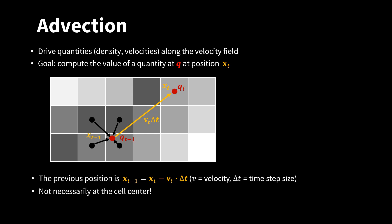The location x t minus v t times delta t is not necessarily located at the center of the cell or at the center of a face. Therefore, to compute this value, we need to compute a weighted average of the values around it.